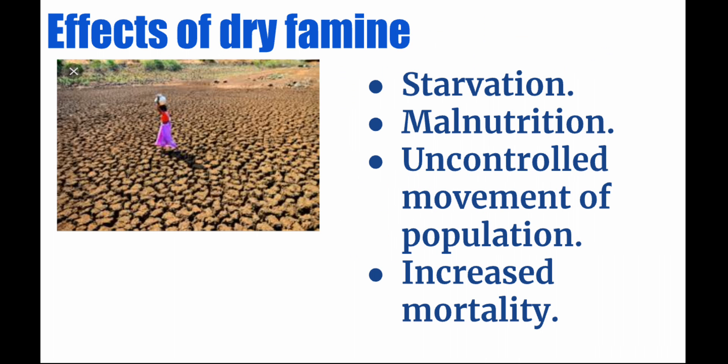The second question is about the effects of dry famine. In the picture, you can see that there is water scarcity and the field is totally dried. The effects of famine are: first, starvation — people don't get food because there is no agriculture due to no rainfall. Second is malnutrition — if there is no food, there will be no nutrition for people. Third is uncontrolled movement of population.